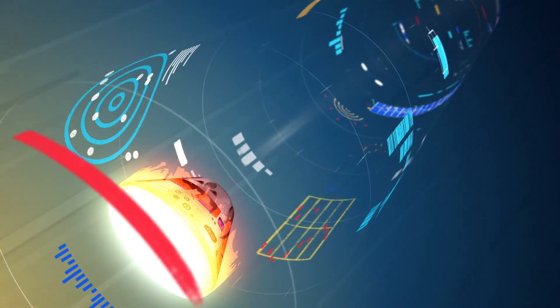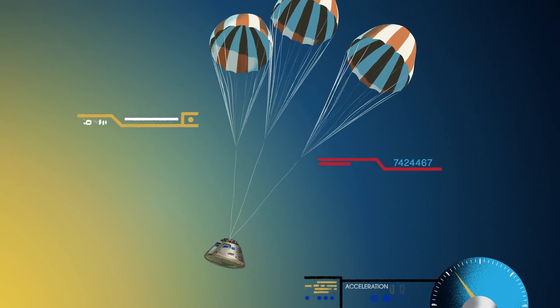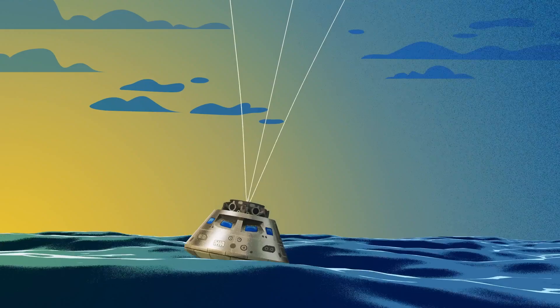With the Orion now at just 300 miles per hour, a series of parachutes uniquely tested and produced for this moment deploy, decelerating the craft to just 20 miles per hour for splashdown.